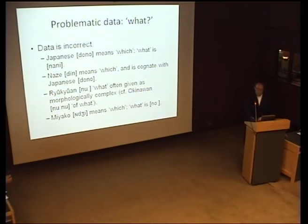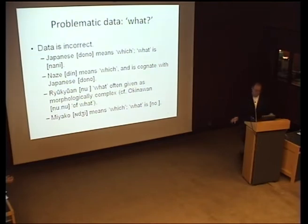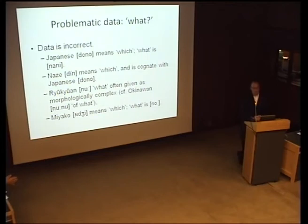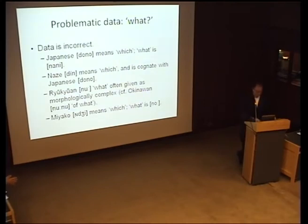The actual Japanese word for 'what' is 'nani.' Nase 'din' again means 'which' — it's cognate with Japanese 'dono,' but even in this incorrect data it's not coded as cognate. The correct Nase word is something like 'nu,' as in Okinawan, where 'nu' means 'what.' The Ryukyuan form is also often given as morphologically complex — something like 'nu-nu' in Okinawan meaning 'of what,' which isn't really 'what.' Miyako 'in ji' means 'which,' not cognate to 'dono,' though that's coded correctly. The number of characters is incorrect — it should not be four but one: there is one cognate set across all of Japonic; all of the words are related.